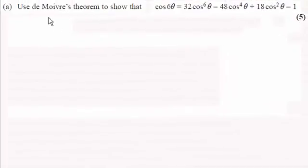Hi there. Now for this question we've got to use De Moivre's Theorem to show that cos 6θ = 32cos⁶θ - 48cos⁴θ + 18cos²θ - 1.